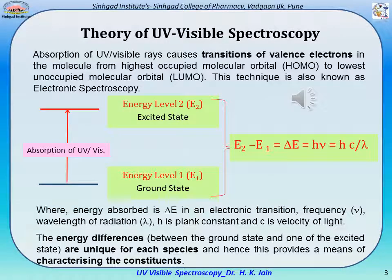Absorption of UV-visible radiation causes transition of valence electrons in the molecule from the highest occupied molecular orbital (HOMO) to the lowest unoccupied molecular orbital (LUMO). This technique is also known as electronic spectroscopy.